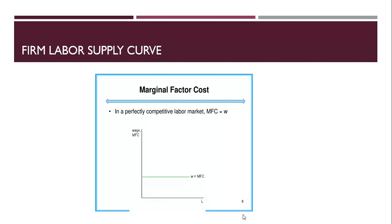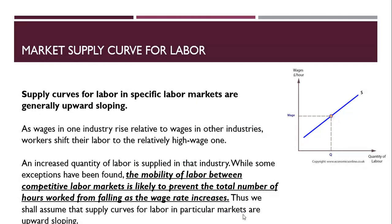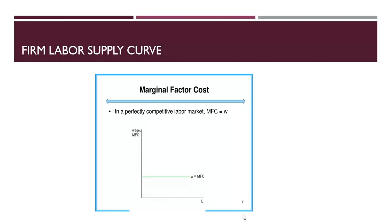Now we will look at the supply curve of labor for a particular firm — the previous curve was for the industry or general market. When talking about a firm, keep in mind firms can be of two types. If the firm is facing perfectly competitive labor conditions, it will be a wage taker — in no position to set the wage. In that case, the marginal factor cost, which equals the wage, will be fixed for whatever quantity of laborers you want to hire.